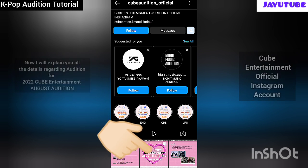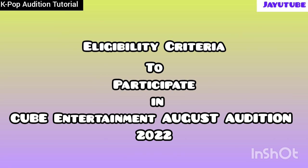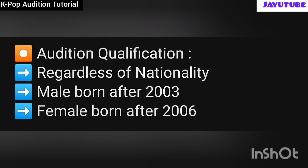First we will talk about eligibility criteria of Cube Entertainment August Monthly Audition 2022. There are three conditions. First, regardless of nationality — whether you are from India, Korea, China, or the USA, you can participate. Second, males born after 2003 (2003 not included) can participate. Third, only females born after 2006 (2006 not included) can participate. You must fulfill all three conditions to participate.